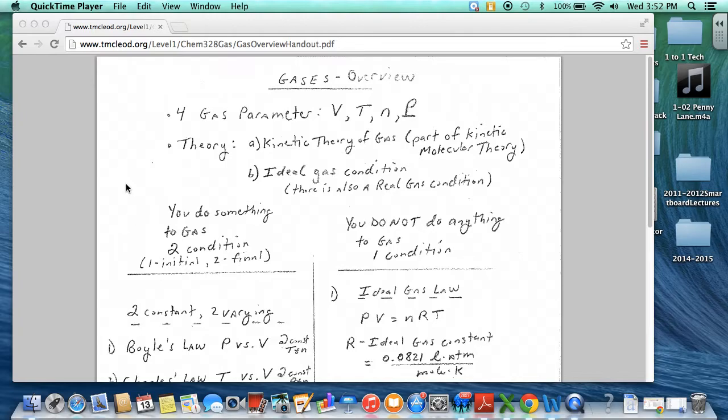Gases can be defined with four variables: volume, temperature, n which is the number of moles or number of particles, and P, the pressure.